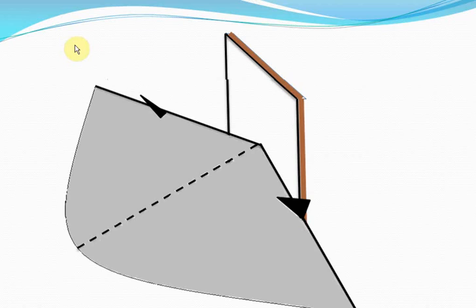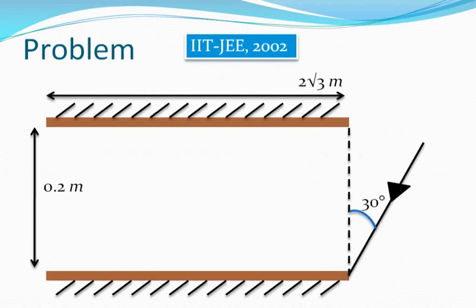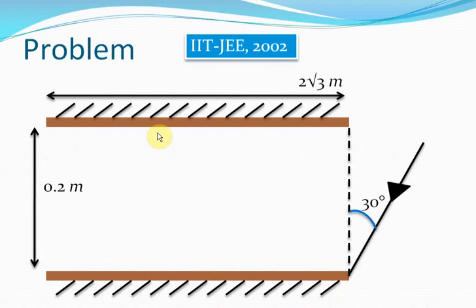Already we are ready to solve an IIT problem. Let's solve it — this question was asked in IIT JEE 2002. In this problem, an incident ray is striking a horizontally kept mirror. We have to find out the number of times this incident ray will be reflected before it leaves this two-mirror tube system.